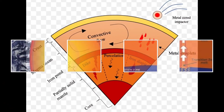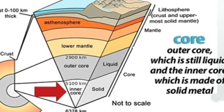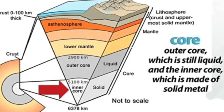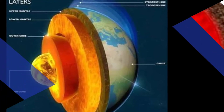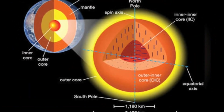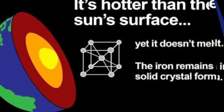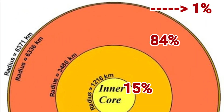After the crust, we come to the mantle, which extends up to a depth of 2900 km below the Earth. The innermost layer is the core with a radius of about 3500 km. It is mainly made up of nickel and iron and is called NIFE — Ni from nickel and Fe from ferrous, that is iron. The core has very high temperature and pressure and also works as a magnetic field. The crust forms only 1% of the volume of the Earth, 84% consists of mantle, and 15% makes up the core.